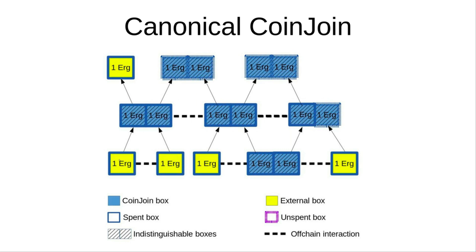The broadcast transaction contains two boxes which are indistinguishable in the sense that one belongs to the left owner and one to the right, but not necessarily in the same order. It is impossible for an outsider to decide which box belongs to whom. This process is repeated multiple times until privacy reaches the desired level. Very informally, each transaction gives you 50% privacy or 50% unlinkability. After two transactions the probability of unlinkability becomes 25%, and so on. This is the canonical variant of CoinJoin I will be using — two at a time, multiple rounds.